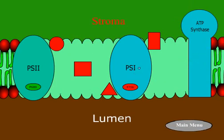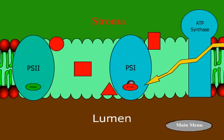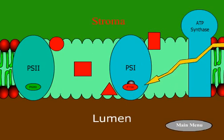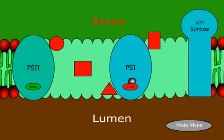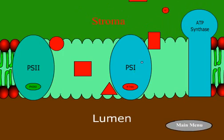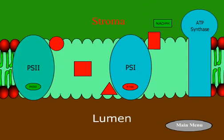Here you see additional light from the light harvesting chlorophyll striking the P700 molecule of Photosystem I. When this occurs, P700 loses electrons or becomes oxidized. The electrons from P700 are passed to an electron acceptor, which then passes them to NADP which is oxidized, forming NADPH which is strongly reduced.